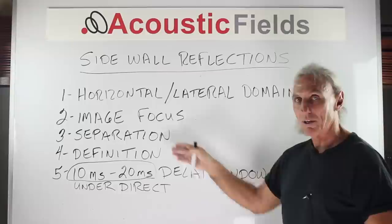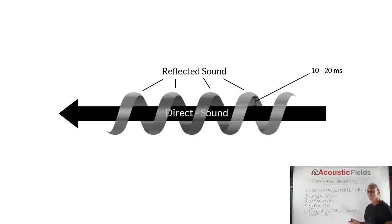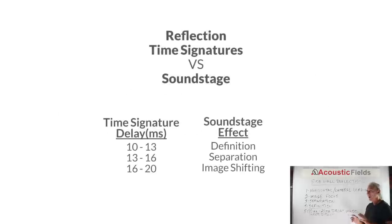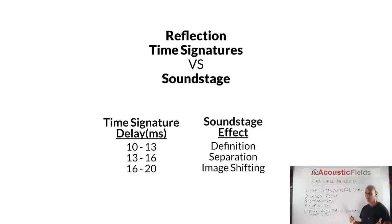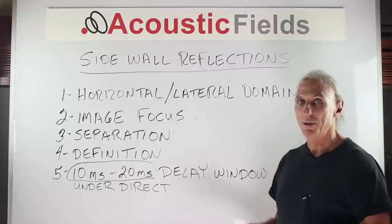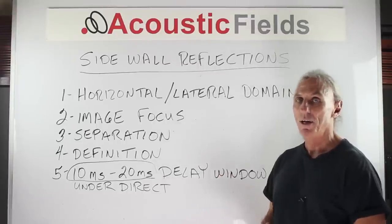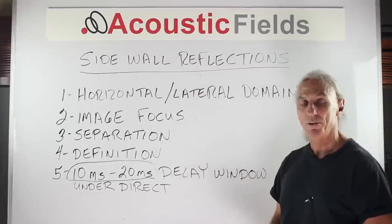Reflected energy contains a lot of information and we have to manage it correctly. In graphic number five, you see there's a really big impact of reflected energy over direct — it kind of wraps around the direct. In graphic number six, we see that in a 10 to 13 millisecond range we have impact on definition; in the 13 to 16 millisecond range, impact on separation; and in the 16 to 20 millisecond range, impact on image shifting. So there's a lot going on in that 10 millisecond window. If you're having difficulty getting your center image to focus correctly, getting it defined, or making your soundstage large enough, you need to deal with sidewall reflections and the time signature on those.